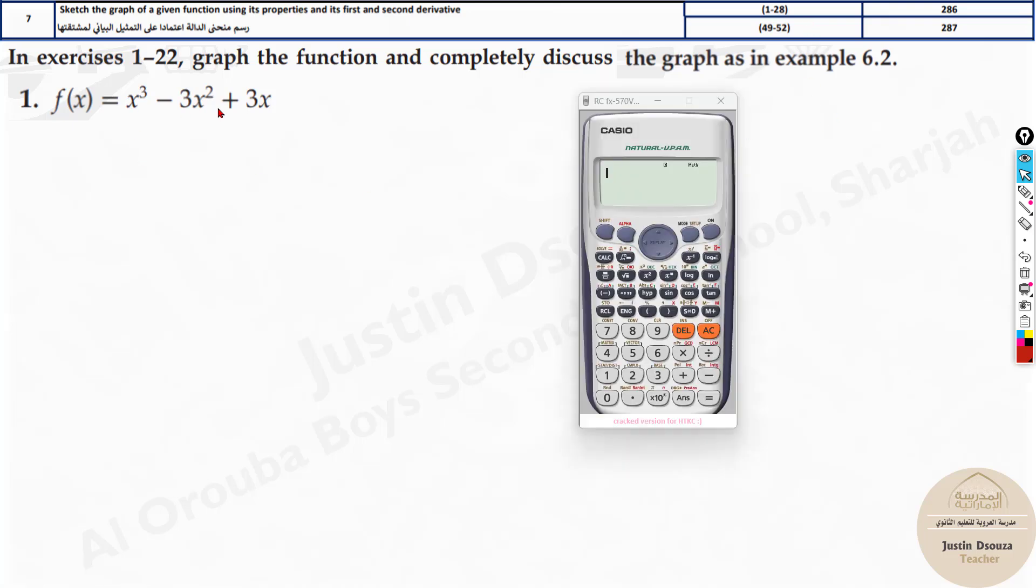In your calculator type this equation as it is. Use alpha x cubed minus 3 alpha x squared plus 3x. Now once you have typed this equation, you can just look into the four options.